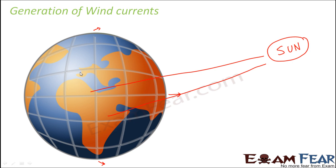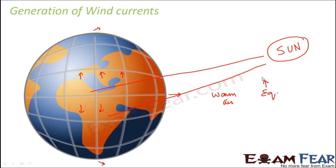The air from the equatorial region tends to move upward, either towards this direction or that direction — it's a sphere, so the lighter air is moving up. Since the earth is also rotating and revolving, the air moves away from the equatorial regions towards the poles. So the warm air at the equator tends to move towards the north pole and the south pole.